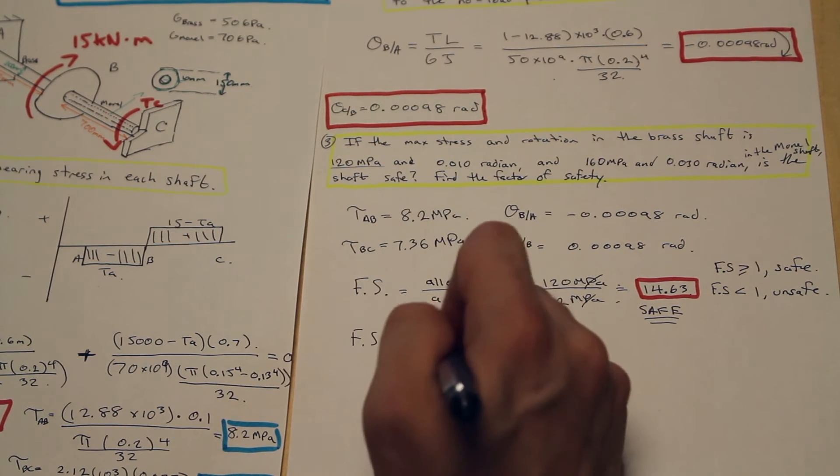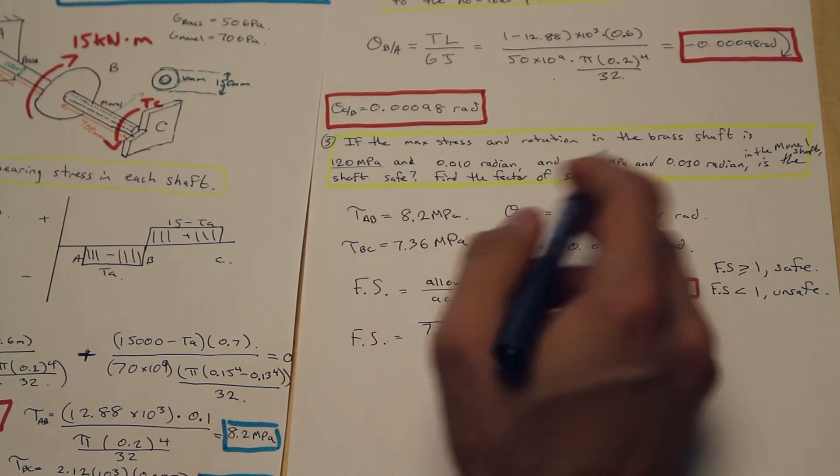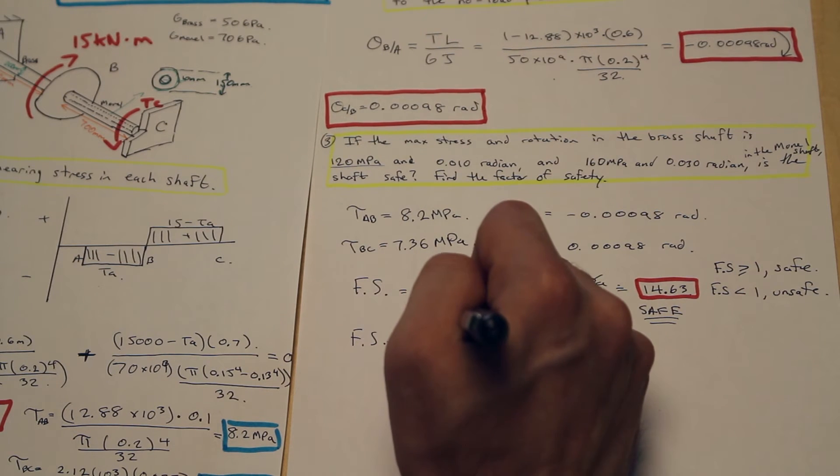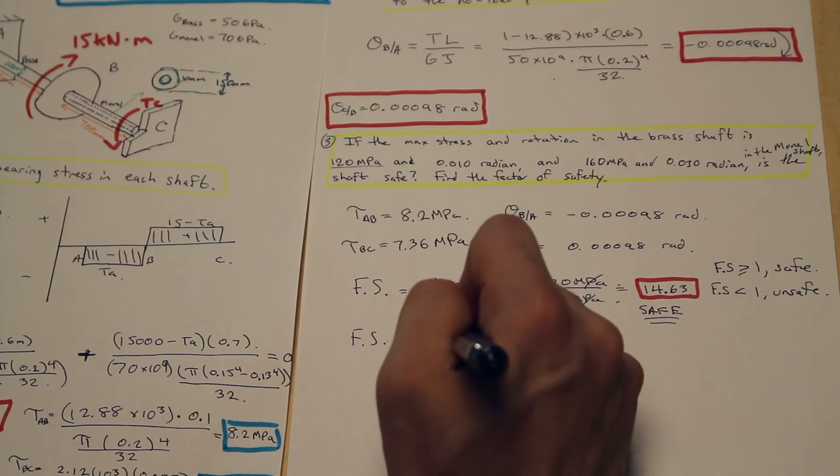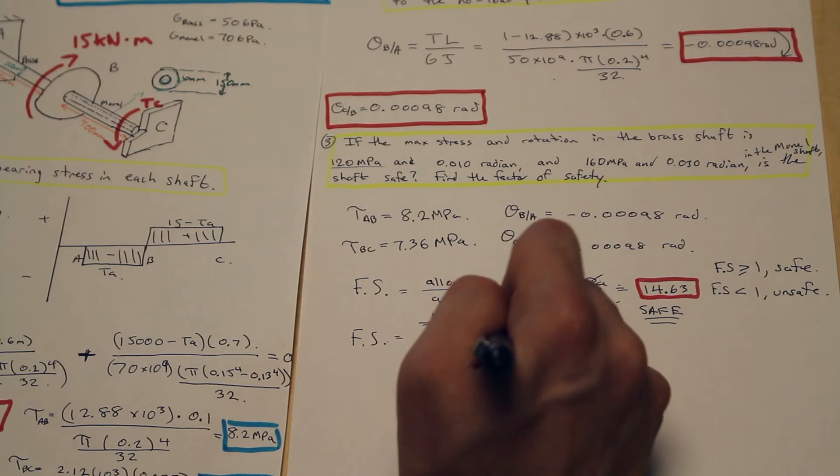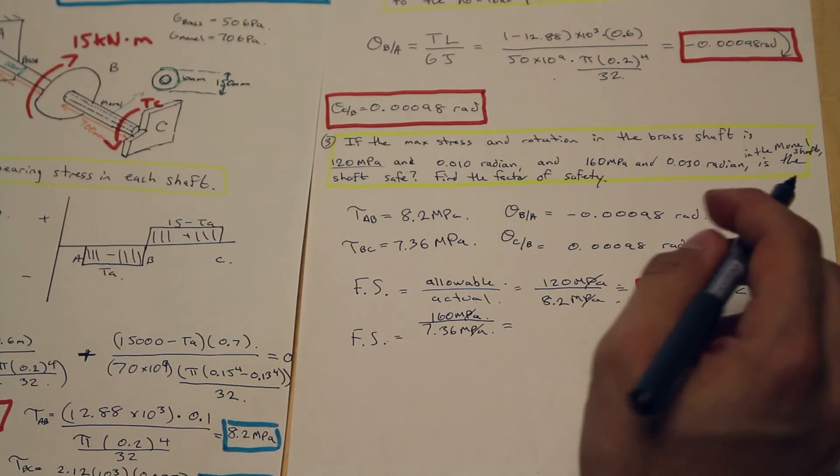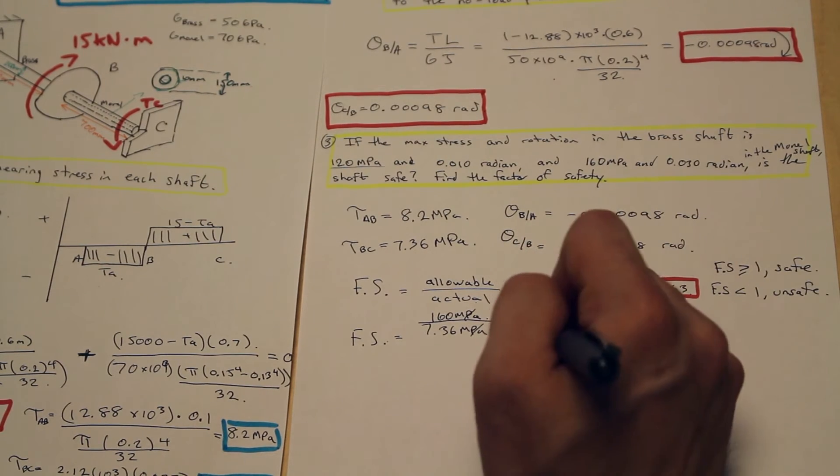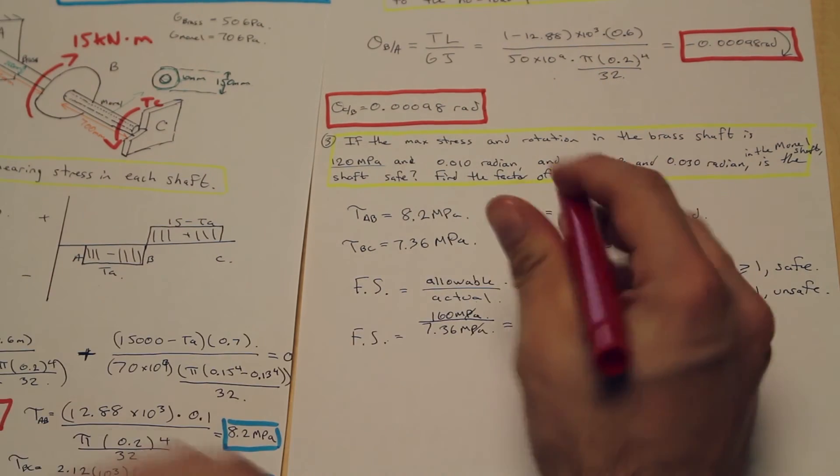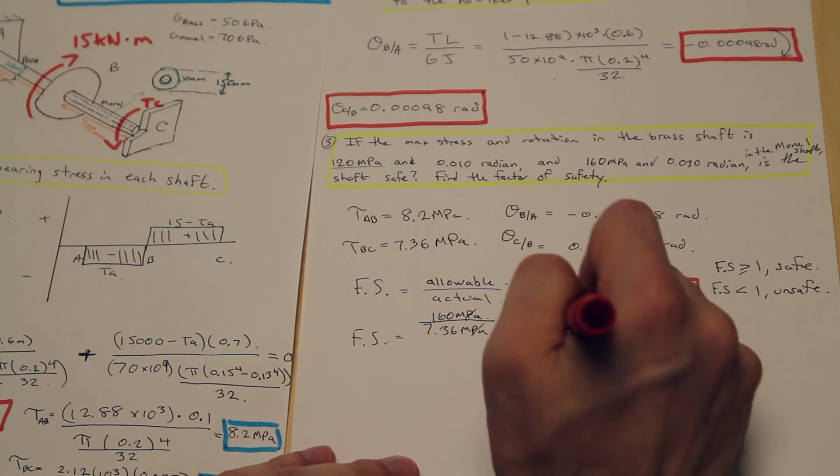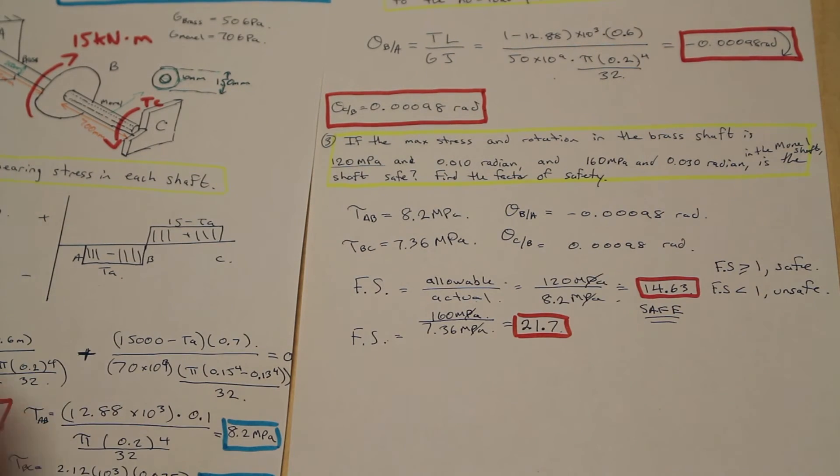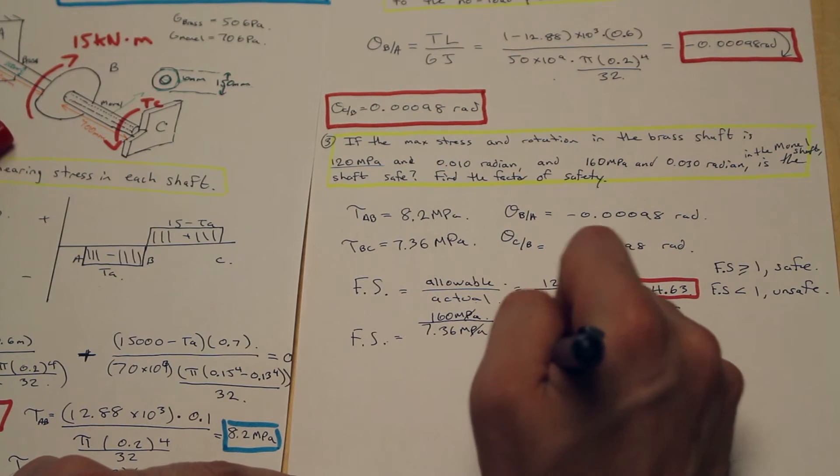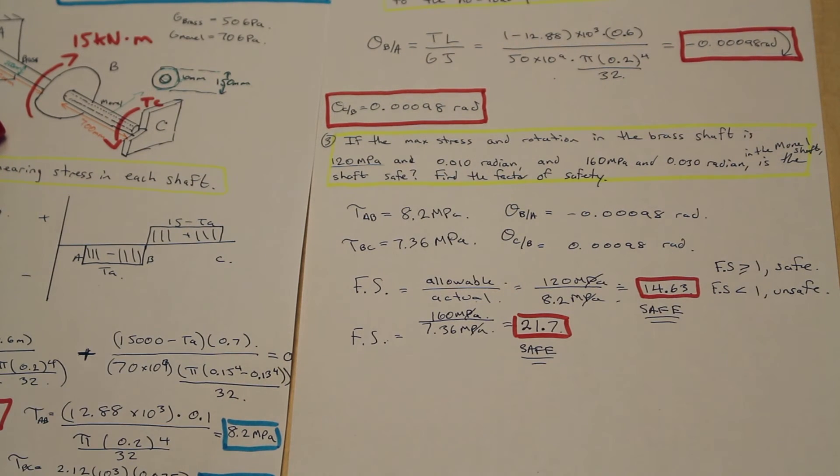We'll do BC now. What's the 160 MPa over the actual 7.36 MPa? Cancel those units. What's the factor of safety in shear for the second section? Well, that is 21.7, which is actually very high, and that's safe. So the shaft is safe in shear.